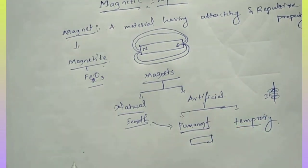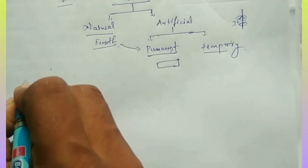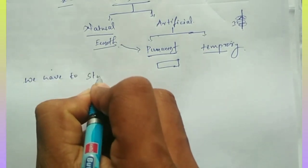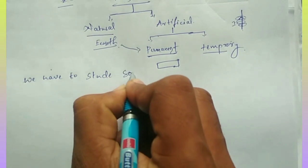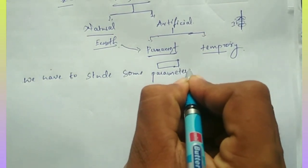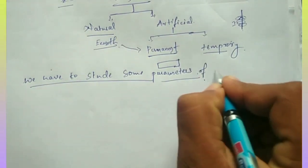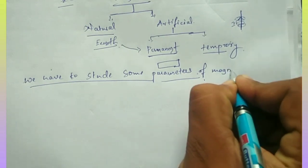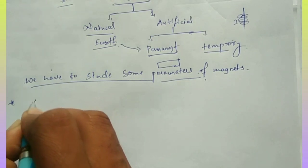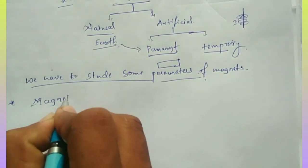Next, we have to study some parameters of a magnet. The parameters we will study are magnetization, magnetic flux, magnetic induction, and magnetic intensity. The first one is magnetization.